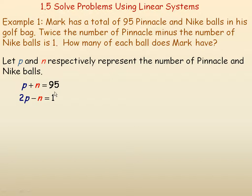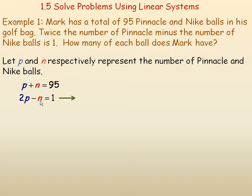We can use one of the methods of solving systems of equations to find P and N. Either method is probably equally convenient here. I could use elimination very quickly — the N's are opposites, so I could just add them and eliminate N. I am going to use substitution, for no particular reason, and I'm going to solve the second equation for N.